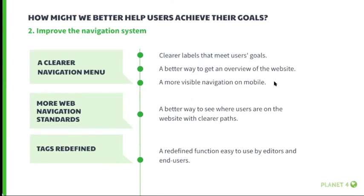We should also improve the navigation system by providing a clearer navigation menu with clearer labels that meet user goals and a better way to get an overview of the sites — though that doesn't mean building a highly hierarchical structure with many menus as in P3. Most importantly, make the navigation more visible on mobile, as users are mostly on mobile devices. We could also integrate more web navigation standards with a better way to show users where they are on the website via breadcrumb paths. Then we should redefine navigation tags so they're easy to use by editors and easy to interact with for end users.